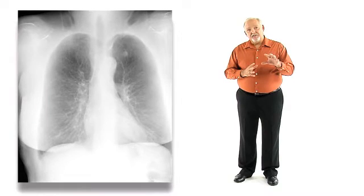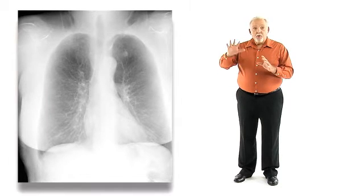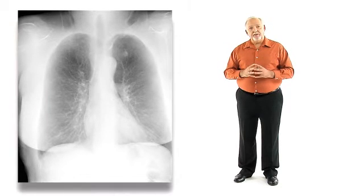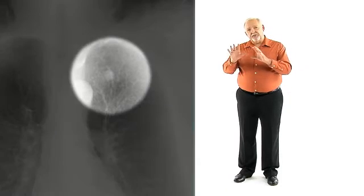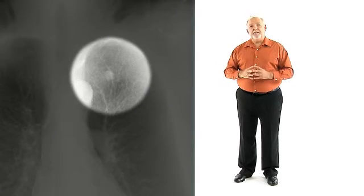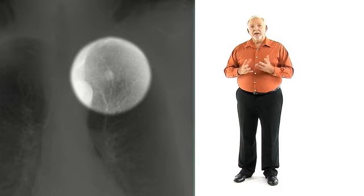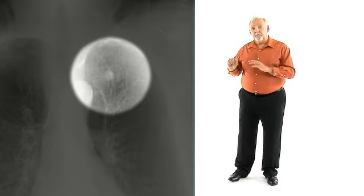Through dual-energy subtraction, the bone anatomy was removed, increasing the visibility of the tissue-based anatomy. A 12-millimeter nodule was discovered lying directly behind the area of concern, ruling out the possibility of a rib-related bone growth.